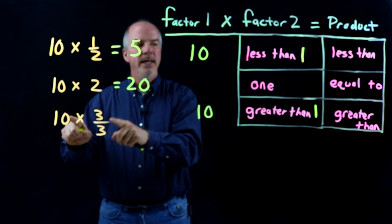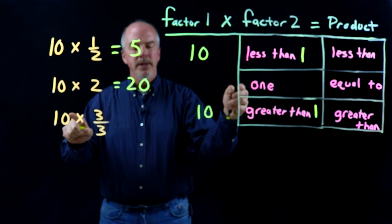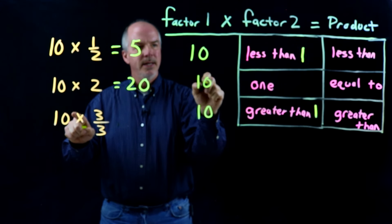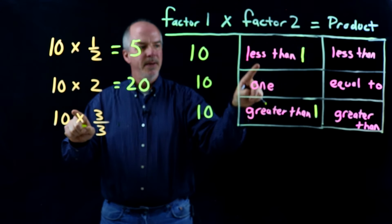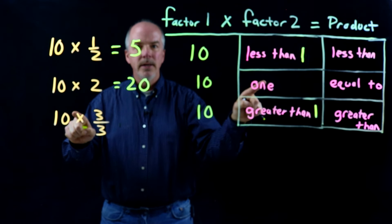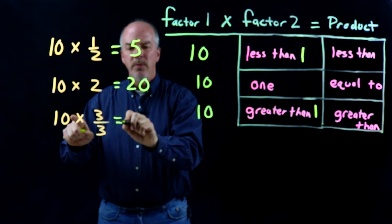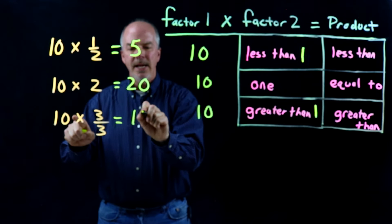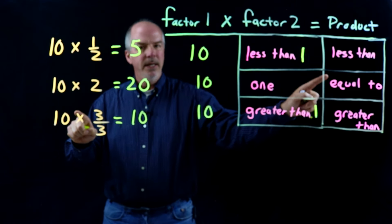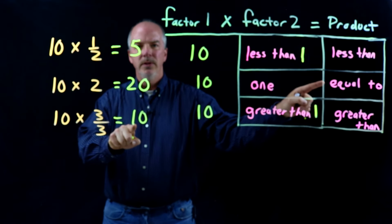The third thing we want to look at is if we multiply something by 1. So if we multiply 10 — our first factor — times the second factor of 1, then we're going to end up with the same thing. It's going to be equal to what we started with.